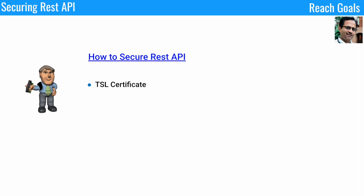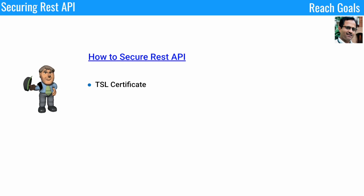Here are the ways to protect the API. The first one is the TLS certificate. The first step in securing an API is to ensure you only accept queries sent over secure channels like TLS. Communicating with the TLS certificate protects all access credentials and API data in transit, using end-to-end encryption.